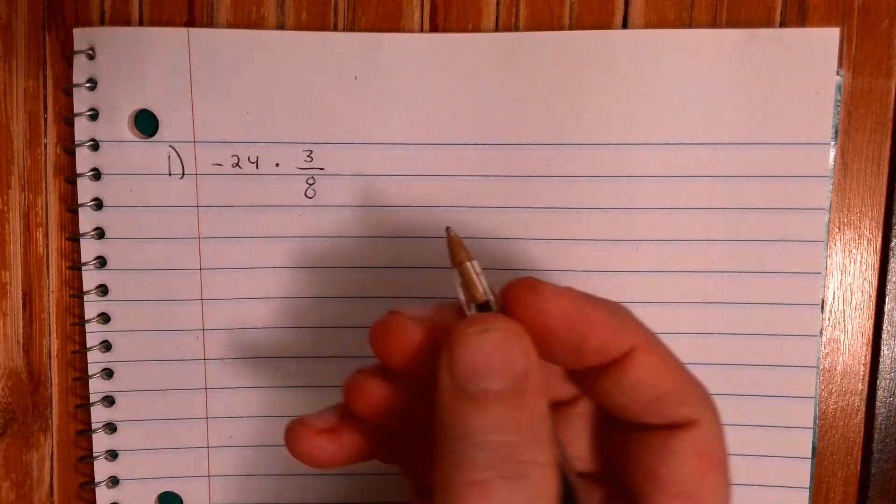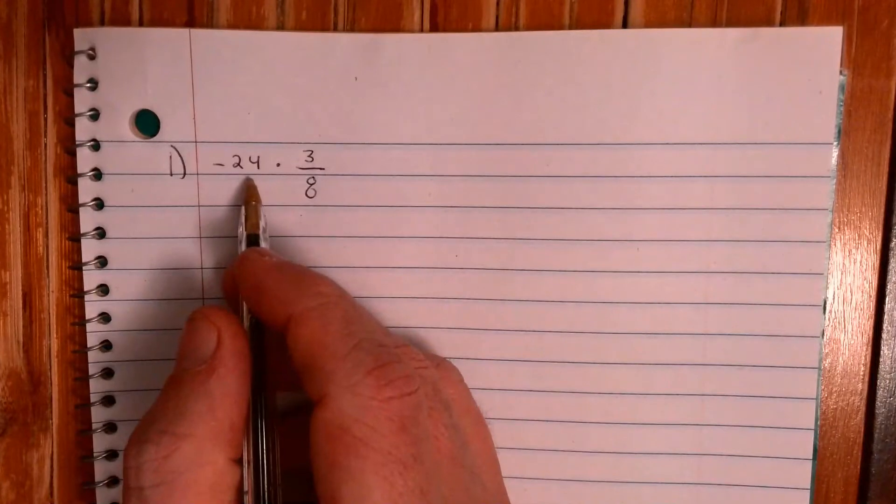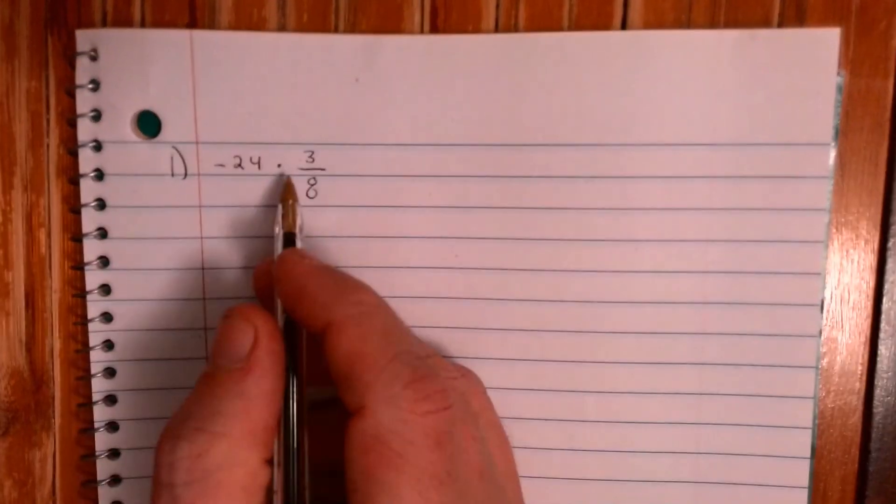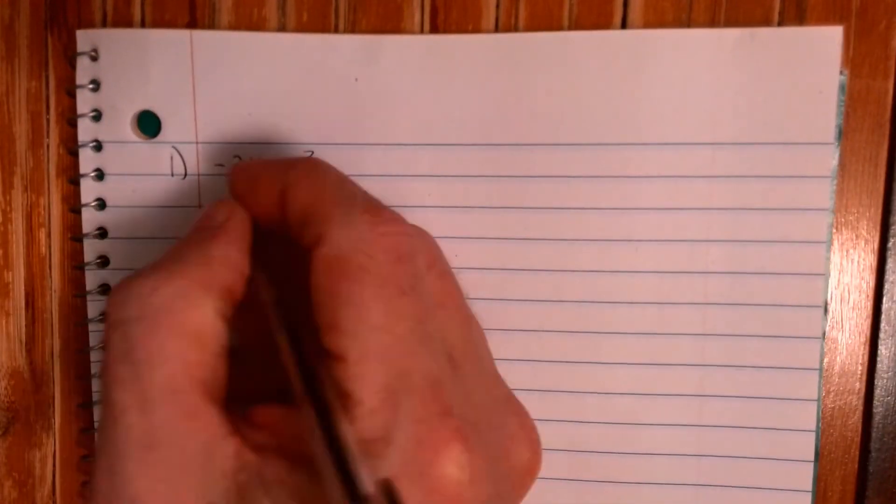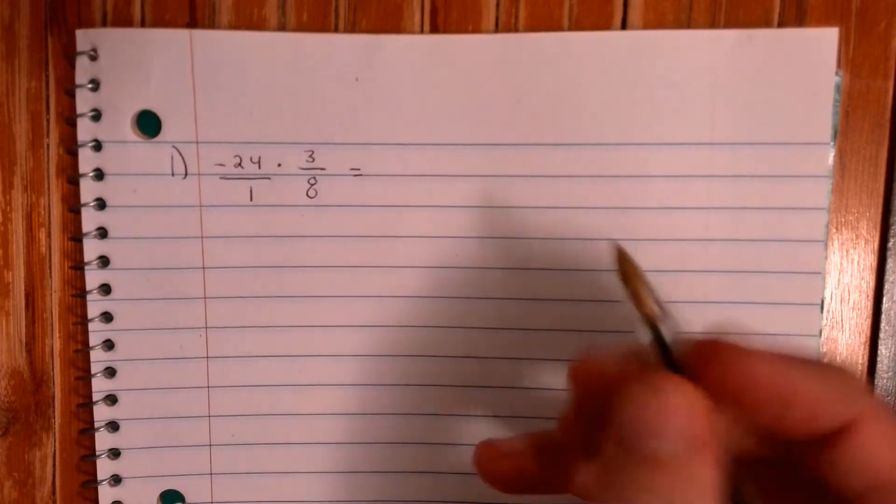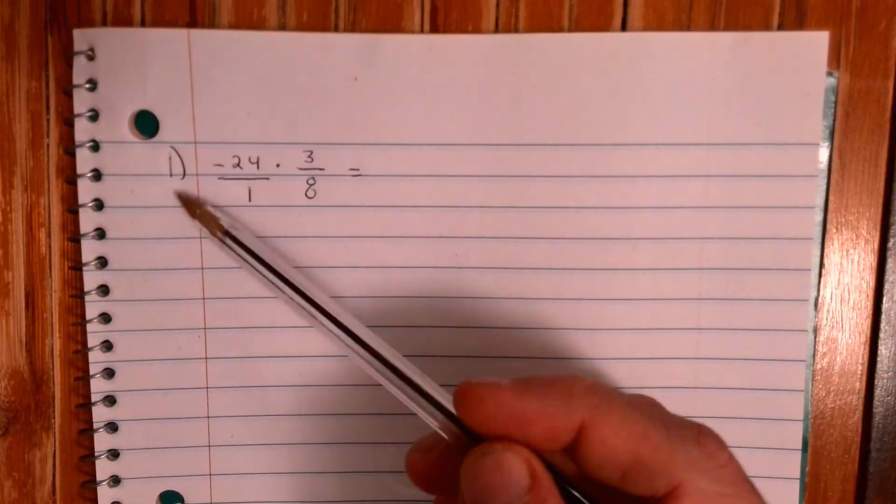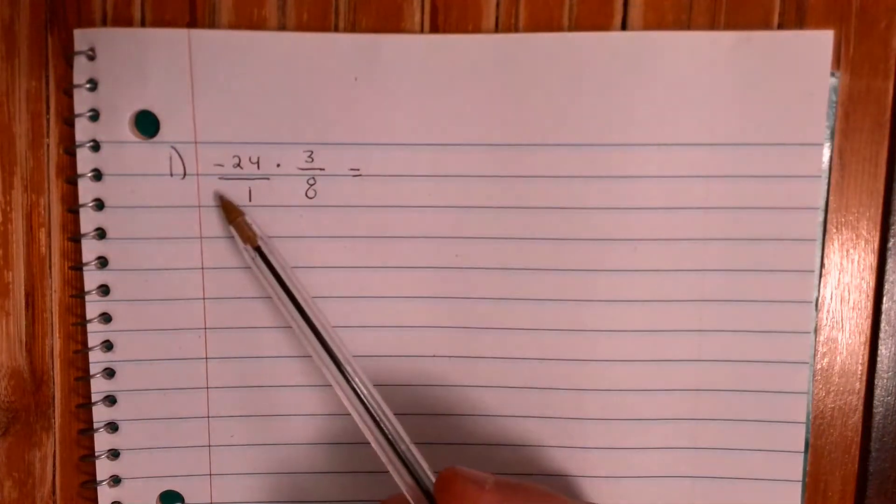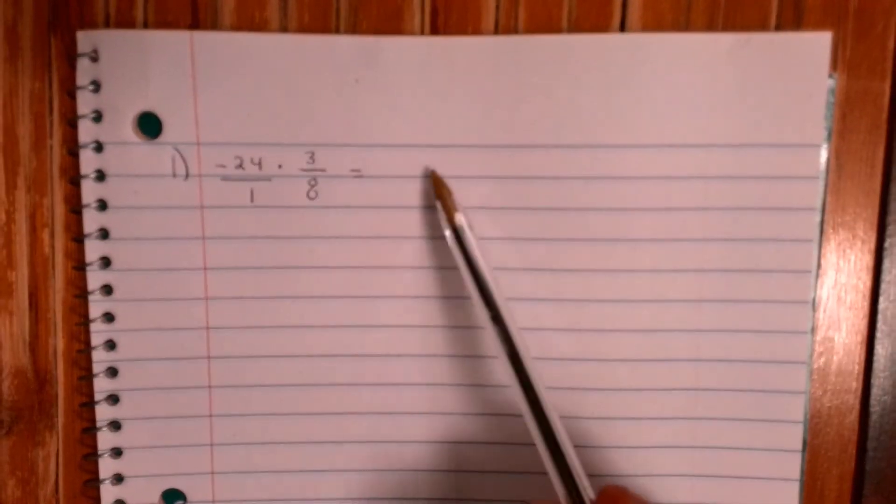So here's an example: negative 24 times three-eighths. It's going to be negative, right? So negative 24 over 1. Now like I said, I love the canceling. Now could you multiply straight across? Sure, you could do negative 24 times 3 and get negative 72 over 8, which you may know, but I'm going to show you from the beginning how we can simplify.